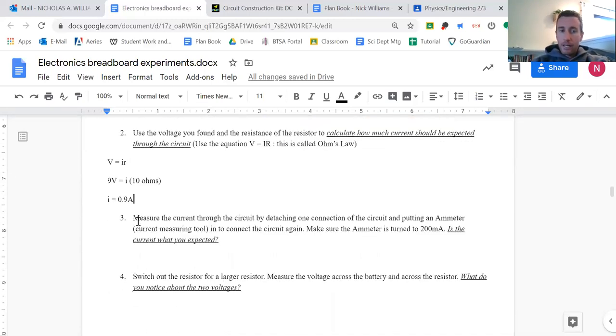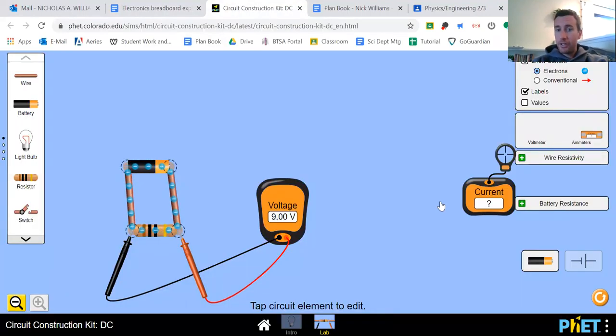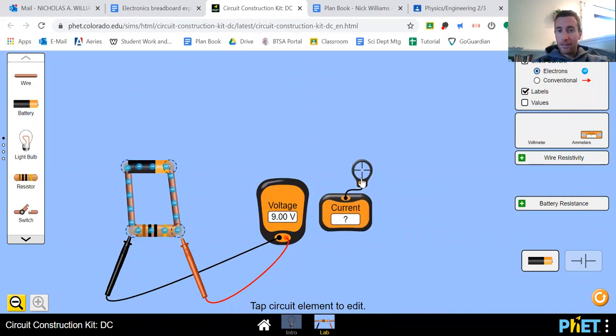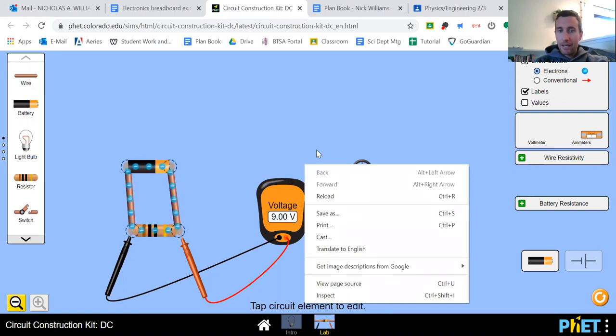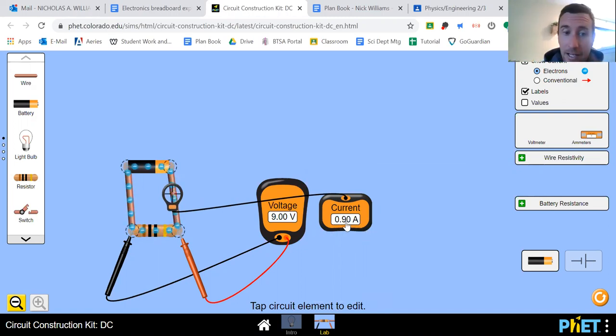For number three, it says measure the current through the circuit by detaching one connection and putting an ammeter to connect the circuit again. Make sure the ammeter is turned to 200 milliamps. Alright, so I'm gonna have to do something a little bit different. Actually, I could do either one. So first, there's a really easy ammeter where I just take this little magnifying glass thing and I put it over the current and it tells me the current and it says 0.9 amps. So that's perfect. That's exactly what I expected it to be.